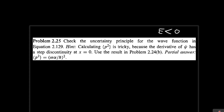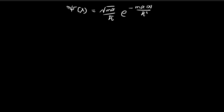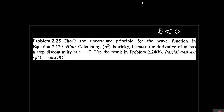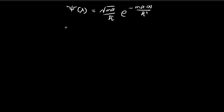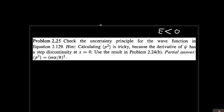In this problem, we're going to verify the uncertainty principle for the wave function for the case when energy level is smaller than zero for the direct delta potential well. It was proved in the book that the wave function ξ(x) for this case is going to be this expression here. So we're going to verify the uncertainty principle for this case.